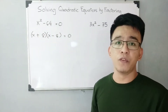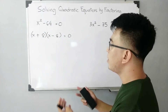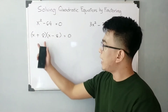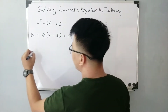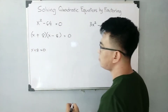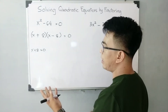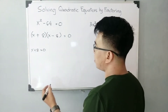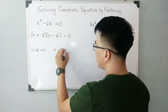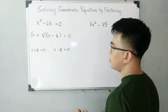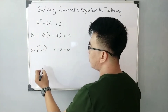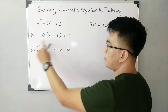The next step is to equate each factor to zero — this is the zero product property. So it becomes: x plus 8 is equal to zero, and x minus 8 is equal to zero.